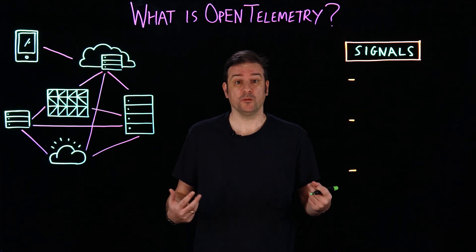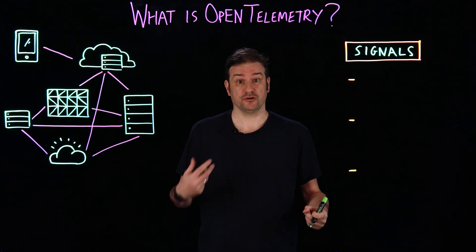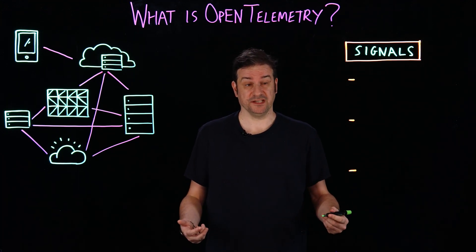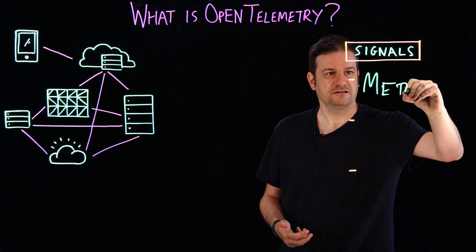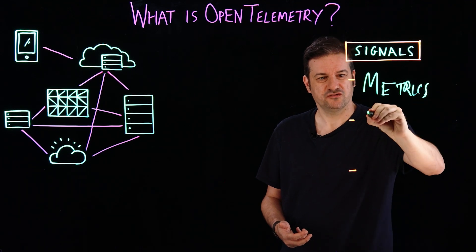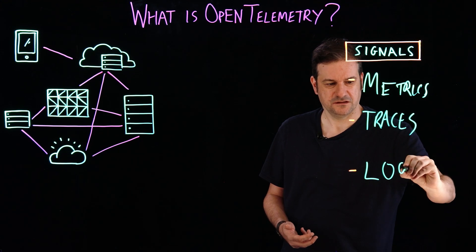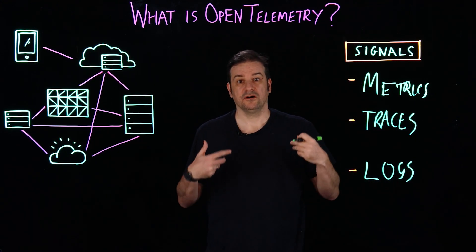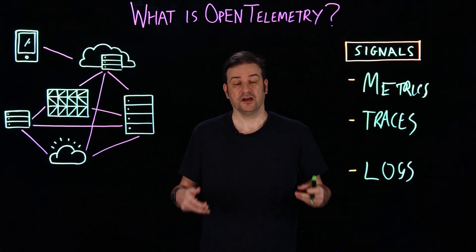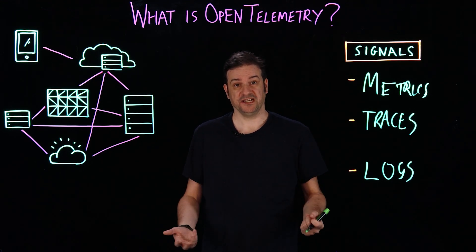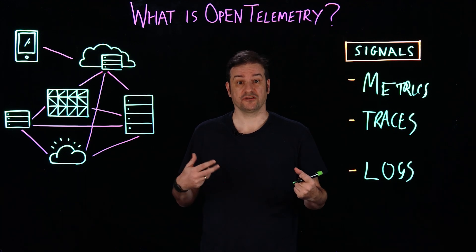So what is it? Put simply, open telemetry is a vendor-agnostic observability framework that helps with the generation, processing, and transmission of different types of telemetry data or signals. These are metrics, traces, and logs. What makes open telemetry different is that, unlike a vendor-specific implementation, open telemetry is an open framework that is managed by the Cloud Native Computing Foundation and has support and contributions from many different vendors across the IT industry.